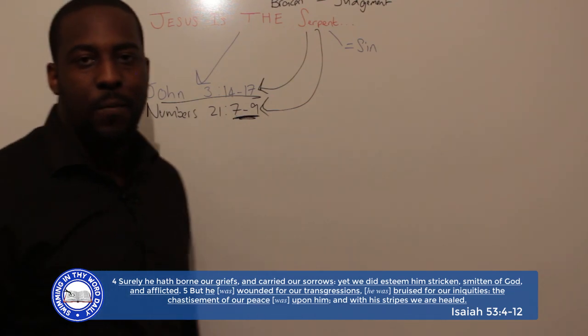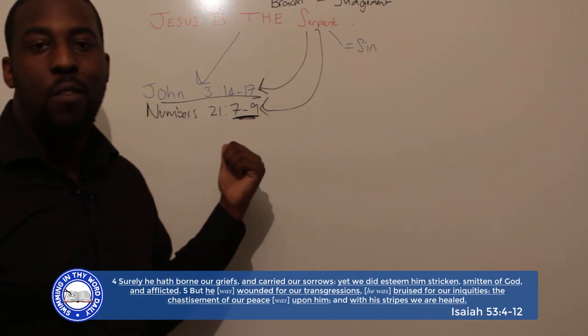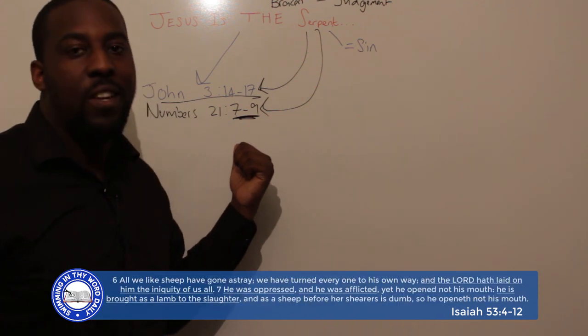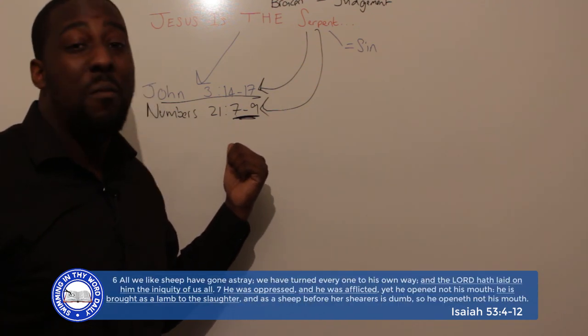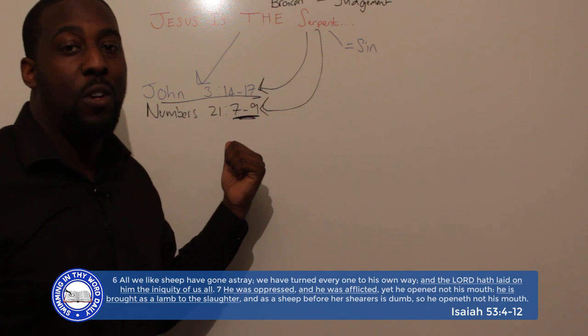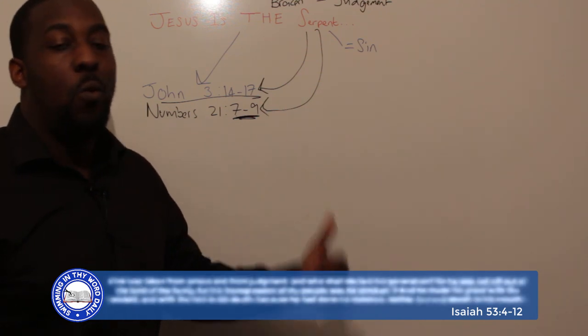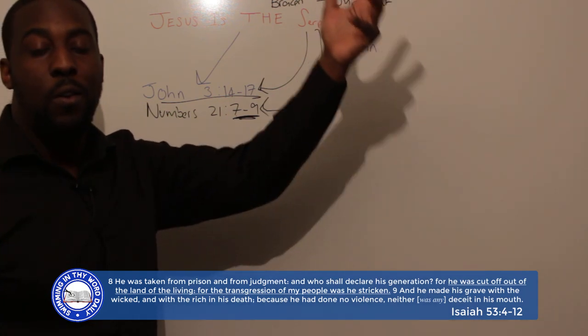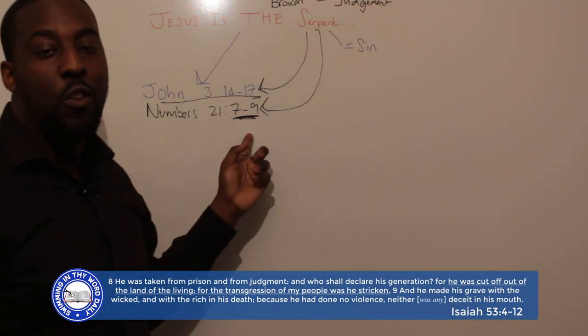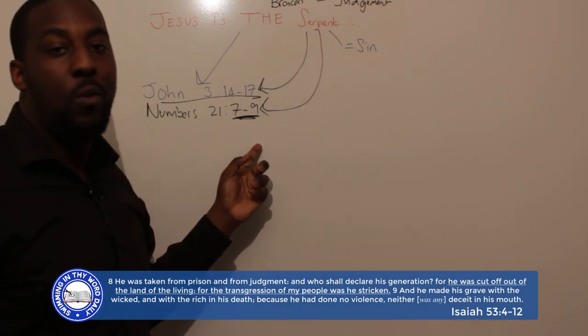The same way in the book of Numbers 21, verse 7 to 9, God had this set up thousands of years ago before Jesus even walked the shores of Galilee as a symbol that we're going to lift up sin on a pole. Anyone who looks to it will live.